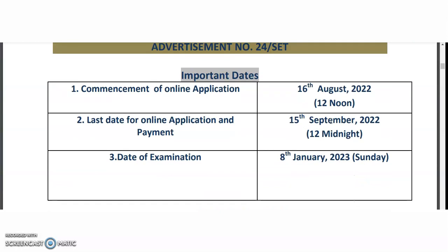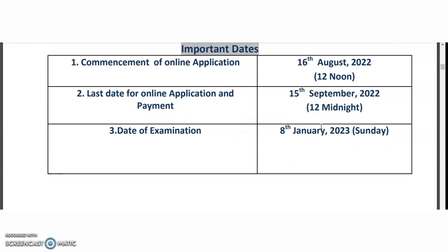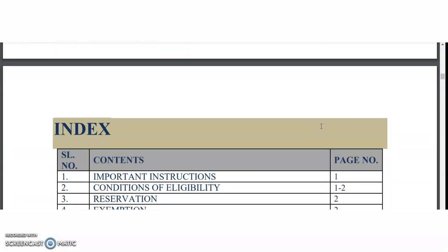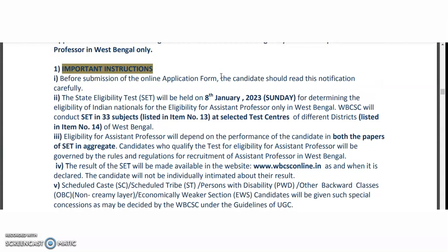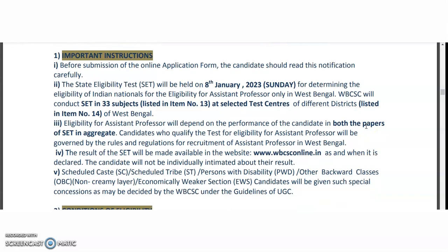The commencement of online application is 16th August and the closing date is 15th September. The date of examination is 8th January 2023. The total brochure is 13 pages and from those 13 pages we will see the main important points. The examination is going to be held on 8th January 2023, a Sunday, so you can apply for these positions. The SET is being conducted for a total of 33 subjects.